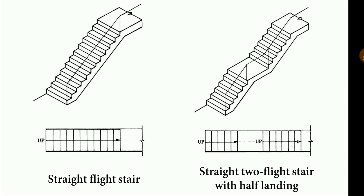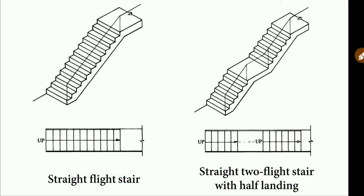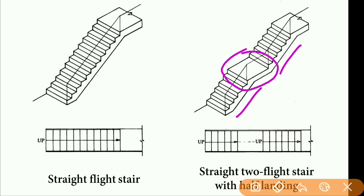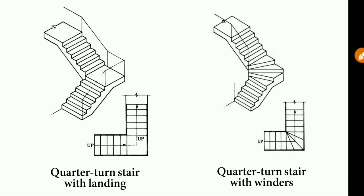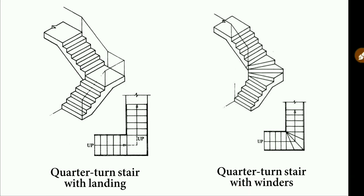Based on the geometrical shape of the staircases, they are classified into different types. The first type is the straight flight stair, which helps in climbing from one floor to the other floor. Next is the straight two-flight stair with half landing — one flight, another flight, and an intermediate landing between the two flights. This is also a type of straight stair. Then there is the quarter turn stair with landing, and the quarter turn stair with winders — the winder portion is shown here.